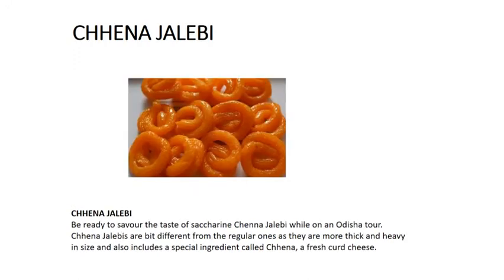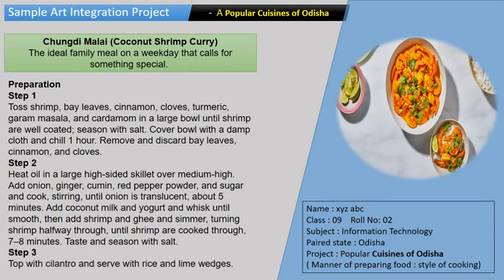Chana Jalebi is another delicious dish. The ingredients include chana and fresh curved cheese. Here you can see a sample slide that is already done — a small picture on one side. Here you can see the preparation: Step 1, Step 2, Step 3. All the ingredients are listed there. In one corner you can include your name, roll number, and subject — all in a single page.